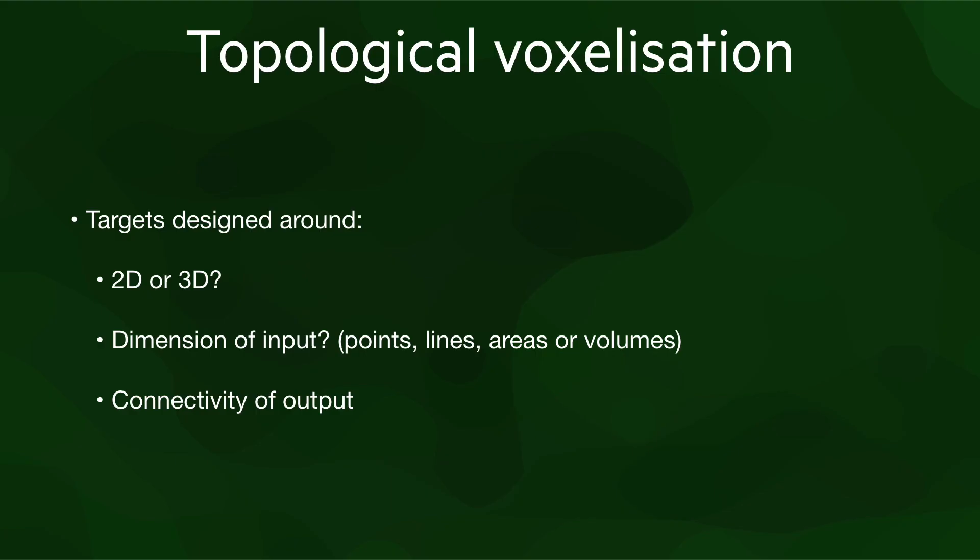Topological voxelization is based around performing a series of intersection tests between the input data and specially designed targets inside every voxel. If any of the targets of the voxel intersects with an object in the input data, the voxel is considered to be part of that object. The shape of the targets to use depends on a few different factors: the dimension that we are working in — 2D for raster images and 3D for voxel models — the dimension of the input data, which could be 0D points, 1D lines, 2D areas, or 3D volumes, and the desired connectivity of the output.